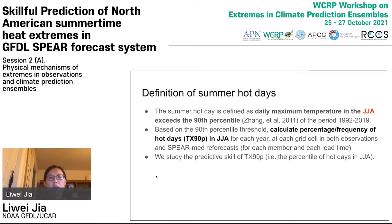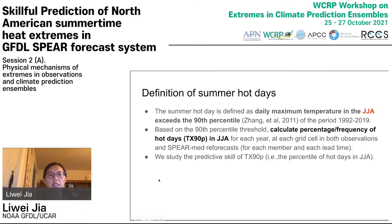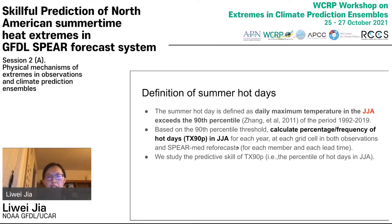First, we defined summer hot days. Summer hot days are defined as daily maximum temperature in the JJA season that exceeds the 90th percentile threshold of the hindcast period from 1992 to 2019. Based on this 90th percentile threshold, we calculate the frequency of hot days. This extreme index is called TX90P. We calculate TX90P in the JJA season for each year and each grid point in both observations and the SPEAR hindcast data, then study the predictive skill of this extreme index.